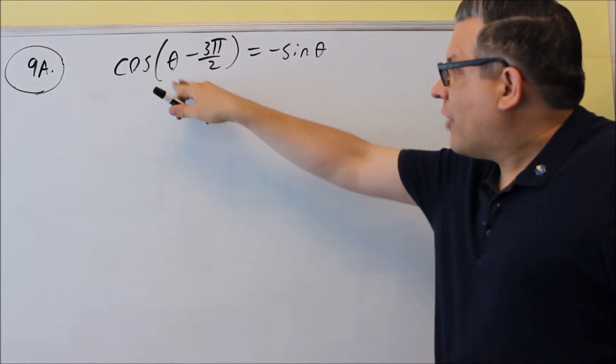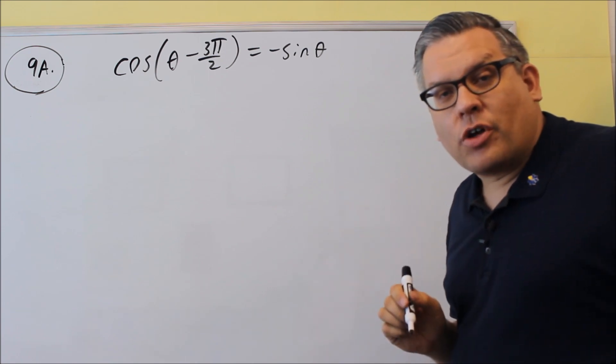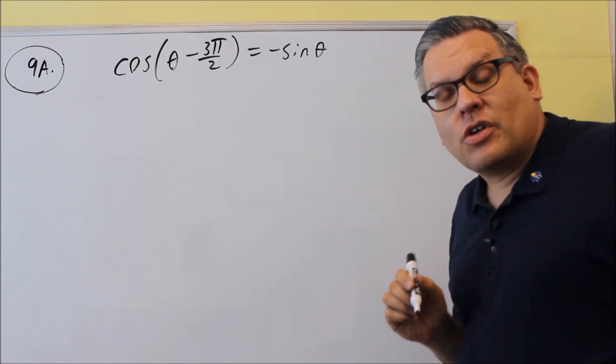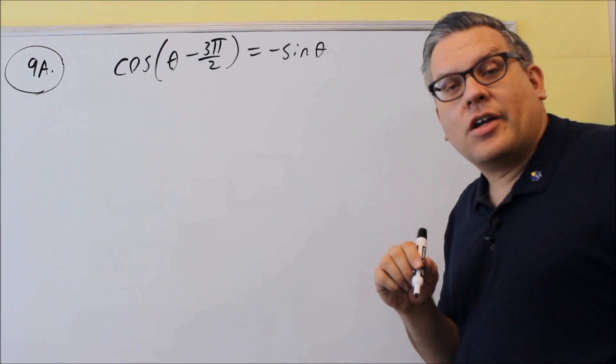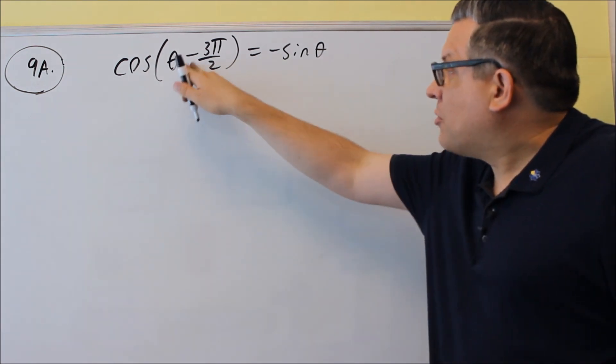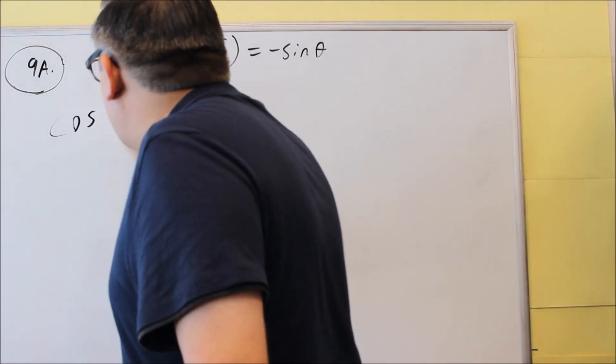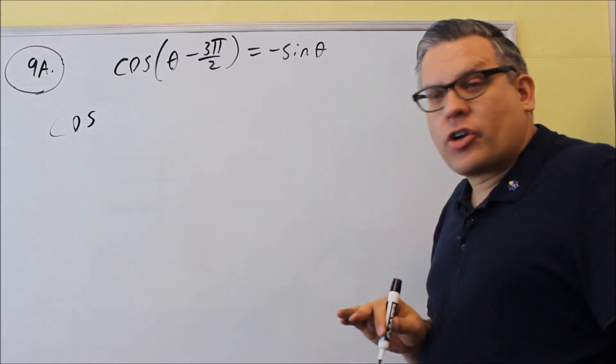So, in this particular one, I have a cosine with two things being subtracted, so I'm going to use the difference formula for cosine. Now that one is cosine x, cosine y, plus sine x, sine y. Remember the one for cosine is always the opposite sign from what you see inside here. So I'm going to use that formula.